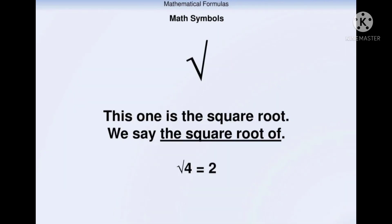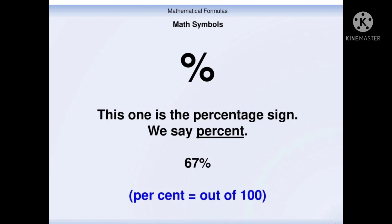This one is the square root. We say the square root of. Square root of 4 is equal to 2. This one is the percentage sign. We say percent. 67 percent. Percent is equal to out of 100.